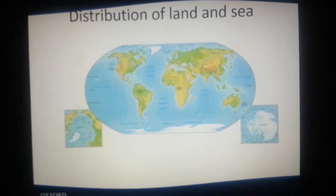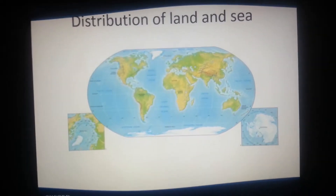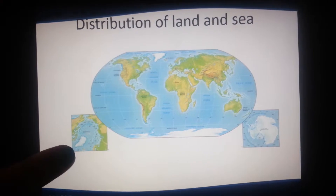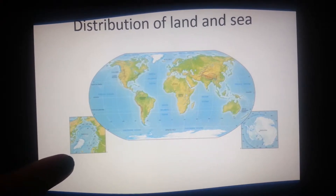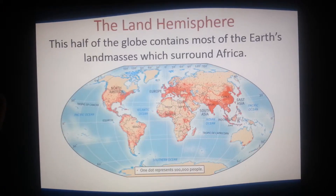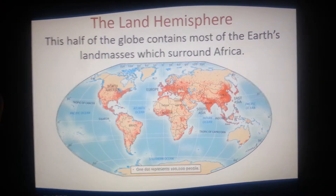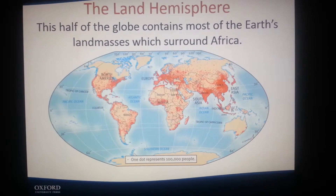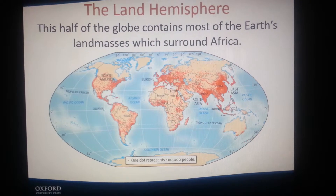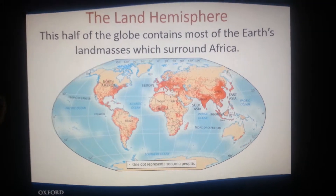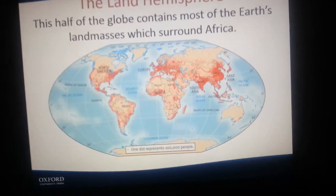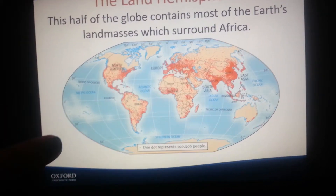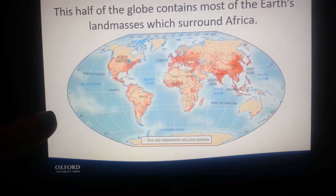And then distribution of land and sea — land being over 70%. The land hemisphere: this half of the globe contains most of the Earth's land masses, which surrounds Africa.